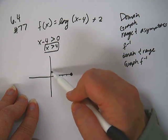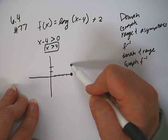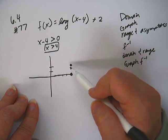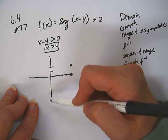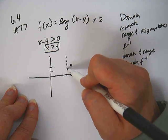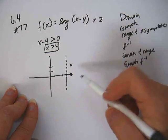And then up two, so it takes that point and moves it up two. Okay, so, and then that means the asymptote that's normally at zero will move also to the right four, so it'll be there instead.